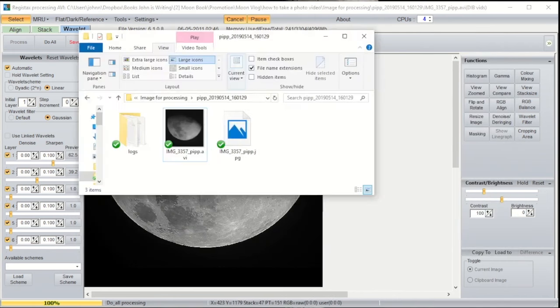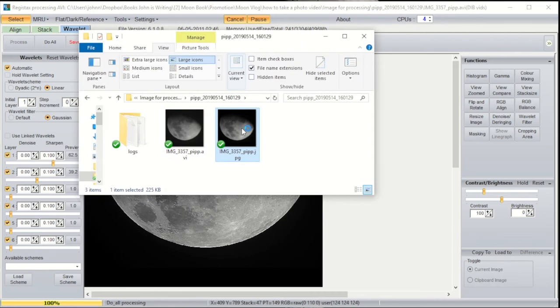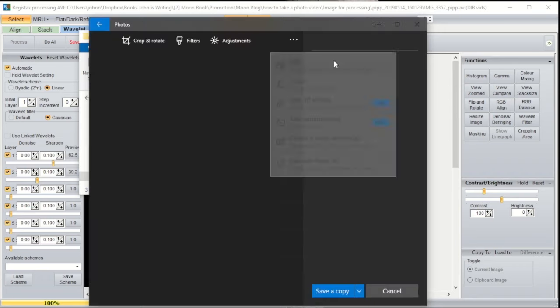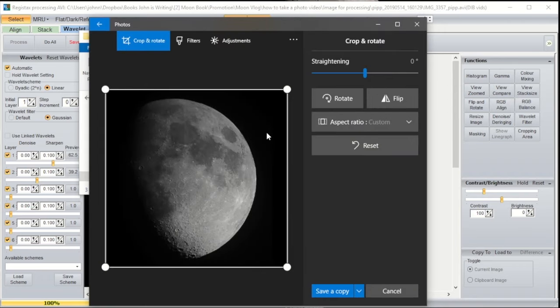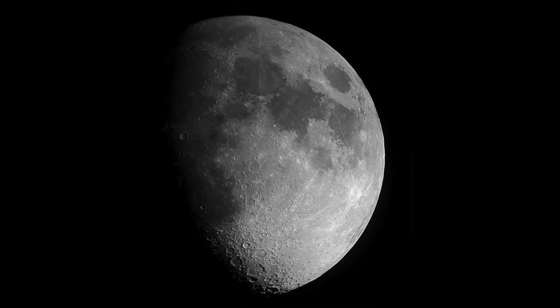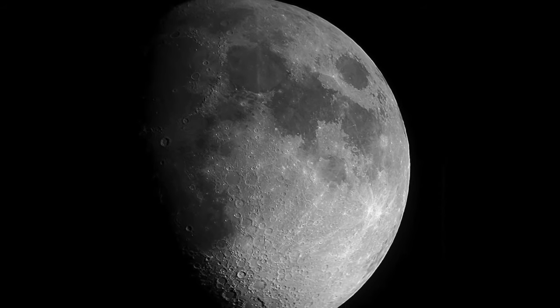Now you need to correct the orientation. To do that, open the JPEG, rotate the image so that the moon is right side up. In this case, the sea of crises is in the top left because I'm using a mirror reversing telescope. The sea of crises should be on the top right. So I'm going to flip the image so that the moon is now in the correct orientation. Then hit save and view your final image.